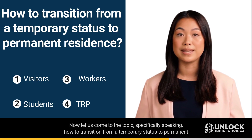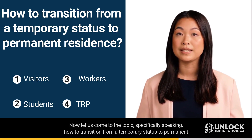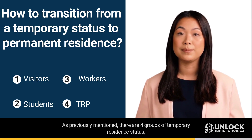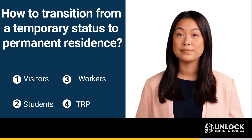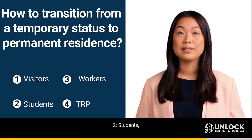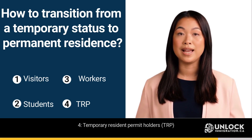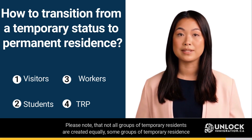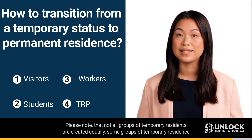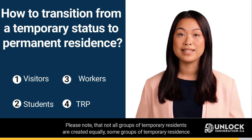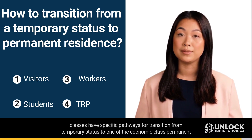Now let us come to the topic — specifically, how to transition from a temporary status to permanent status. As previously mentioned, there are four groups of temporary resident status: 1. Visitors, 2. Students, 3. Workers, and 4. Temporary Resident Permit holders (TRP). Please note that not all groups of temporary residents are created equally. Some groups of temporary residence classes have specific pathways for transition from temporary status to one of the economic class permanent residence programs, but some groups don't have such pathways.